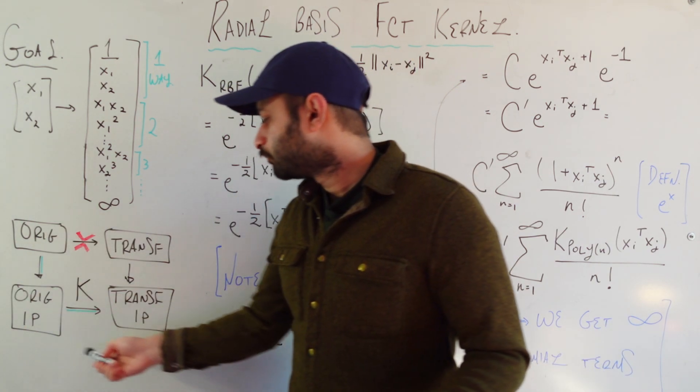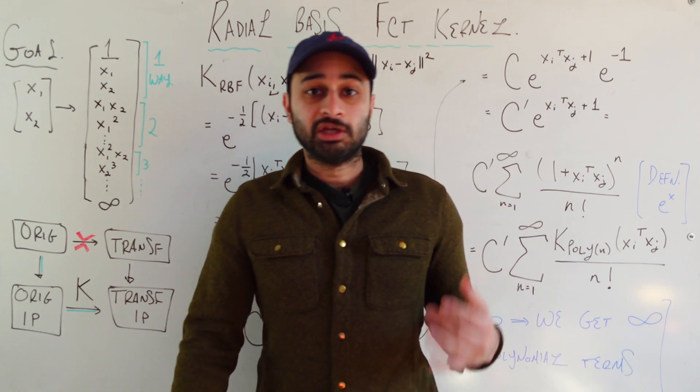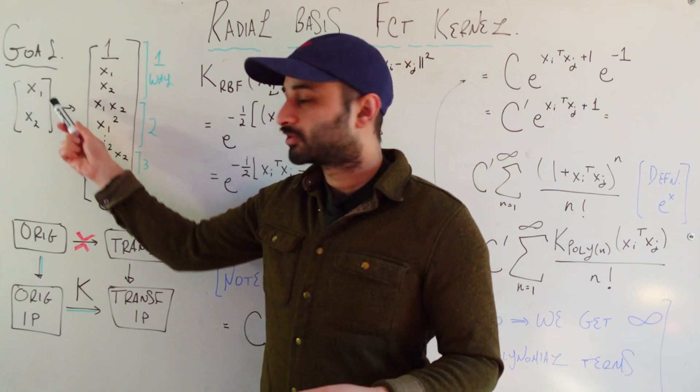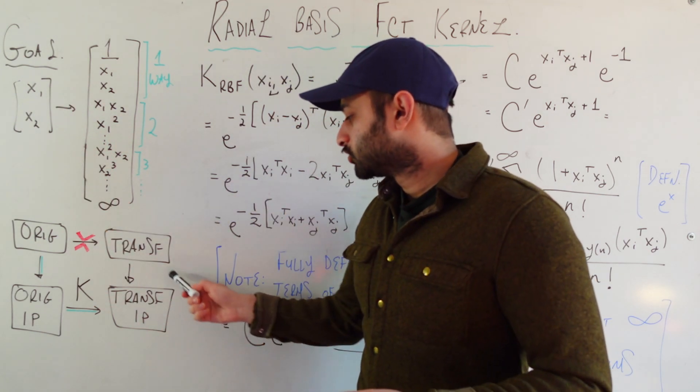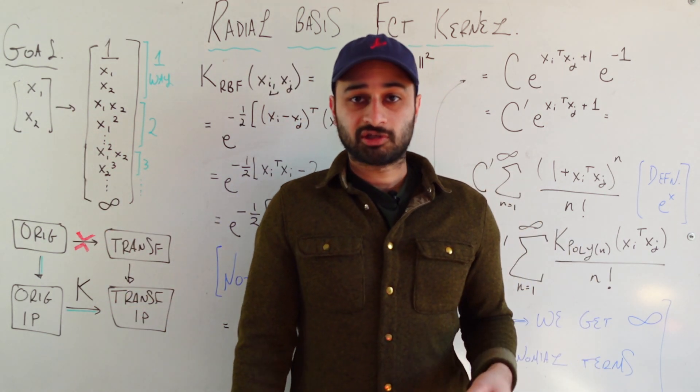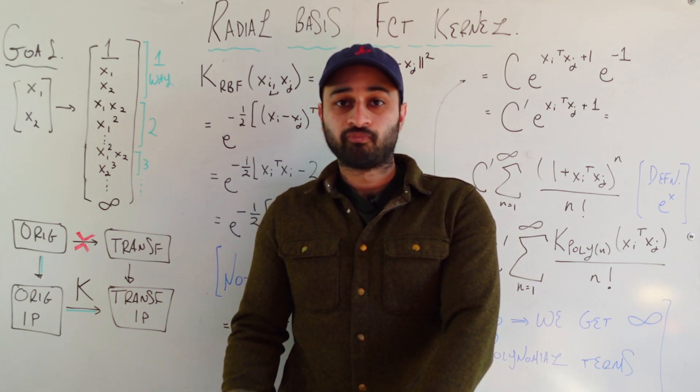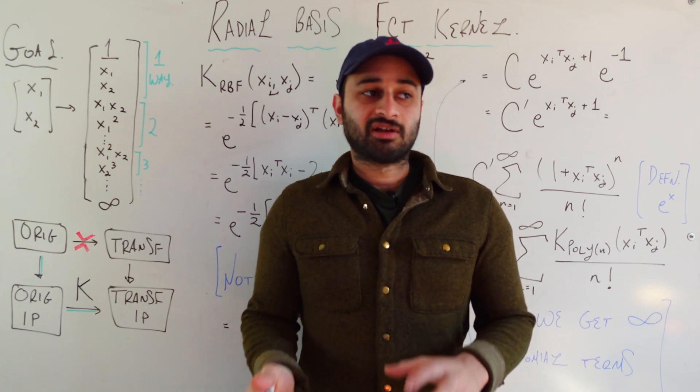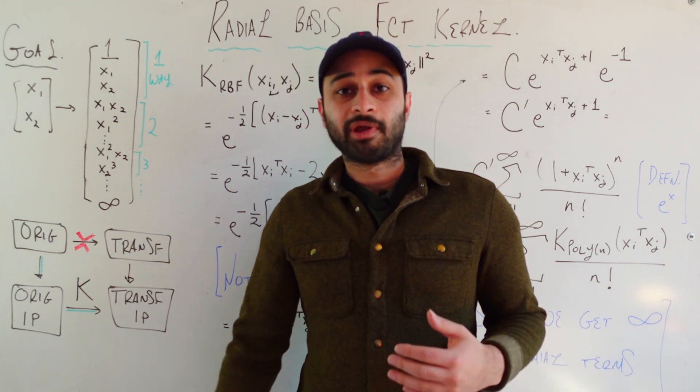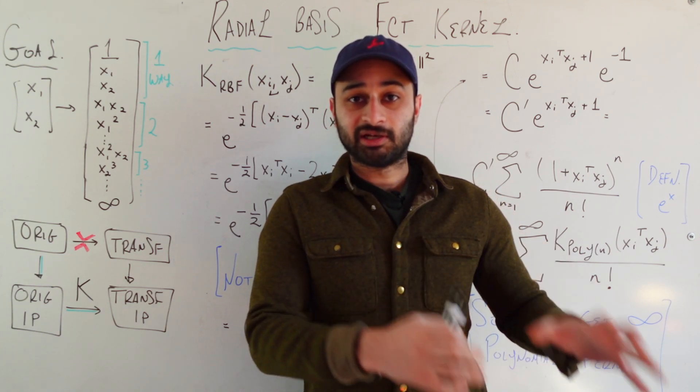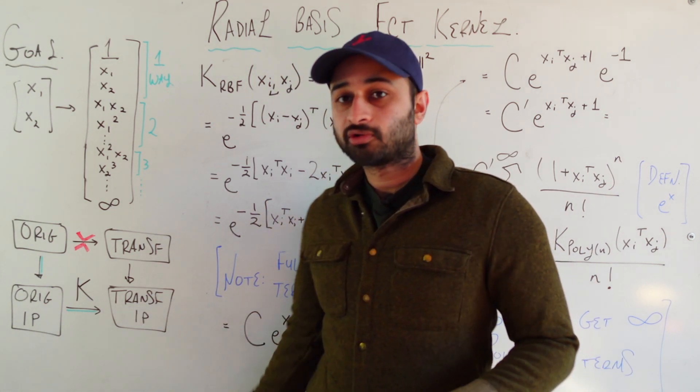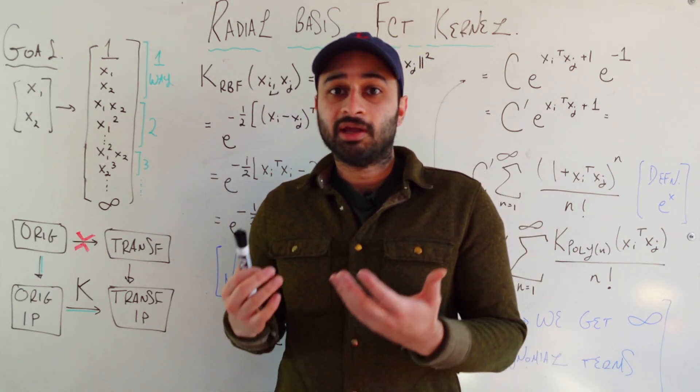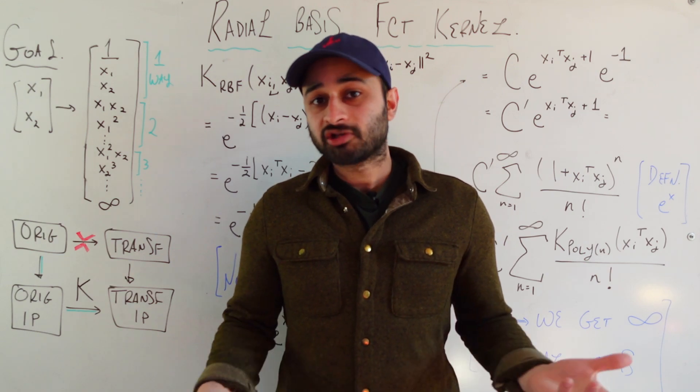And when we look at our diagram again, so we had this diagram in our intro kernels video, and we talked about how we're trying to go from the original data, which is this x1, x2, and we're trying to eventually get to the transformed inner products, which means after we do whatever transformation we're trying to do, we need to get all the inner products between the transformed vectors. And we said in the previous video that if we go this route, where we actually transform the data and have that data living in memory, and then we go ahead and take the inner products of those, that can be inefficient, that can require a lot of data storage, but in this case it's actually much worse than that. It's just impossible.